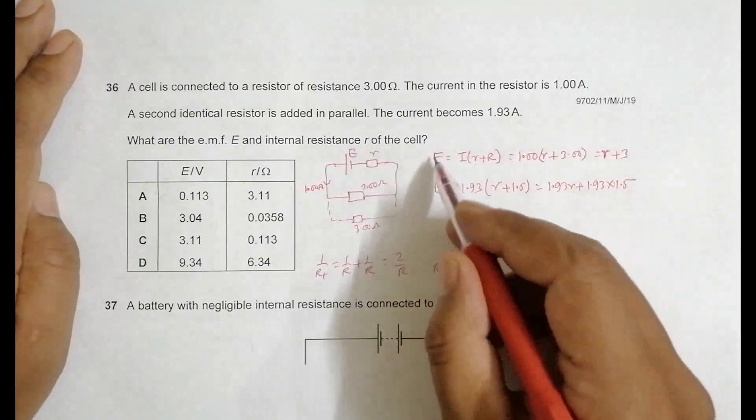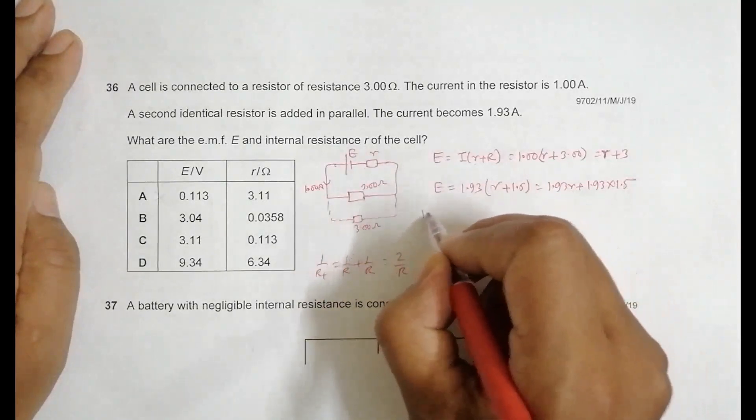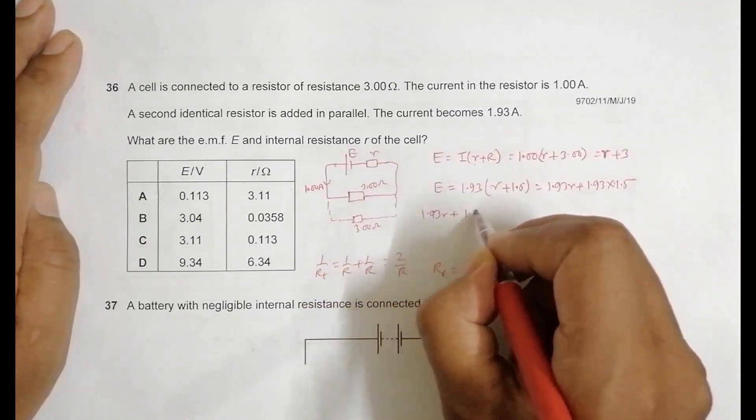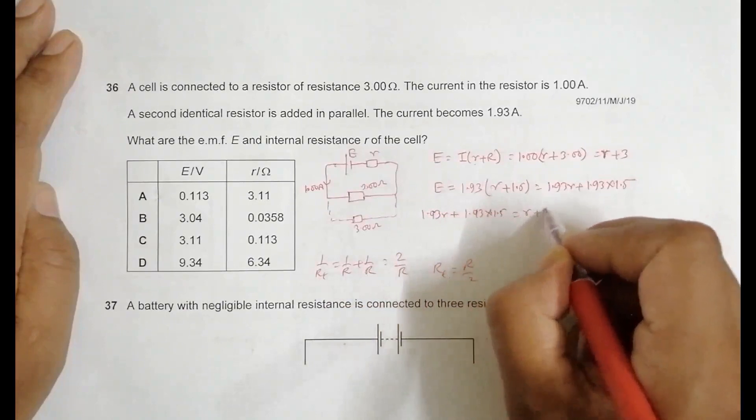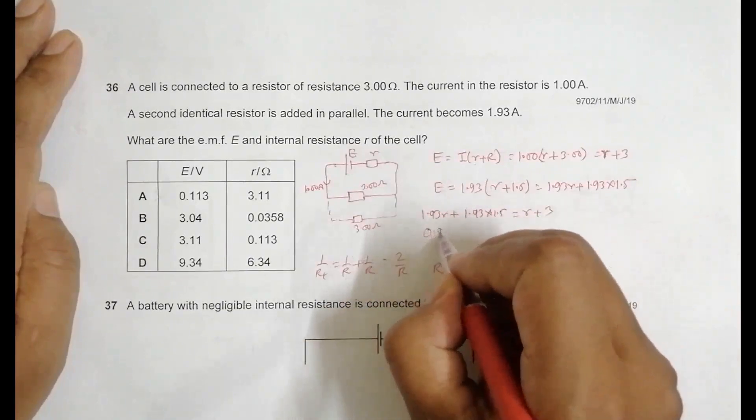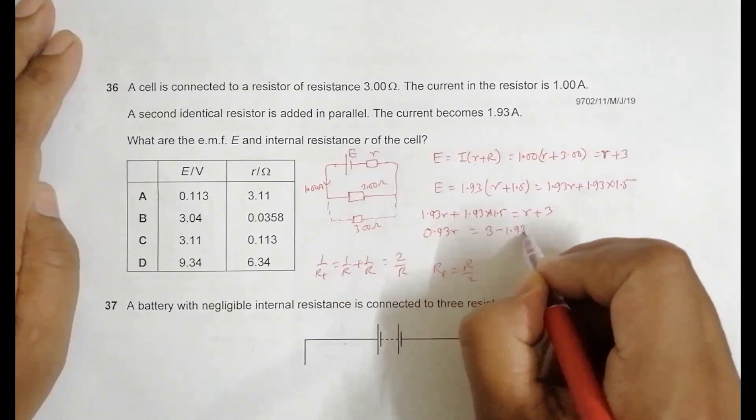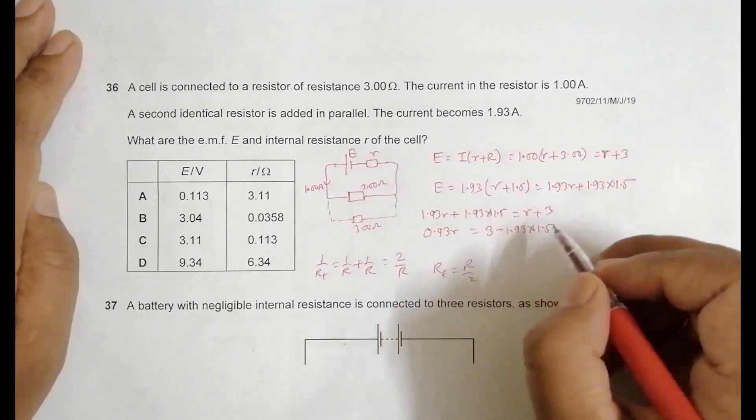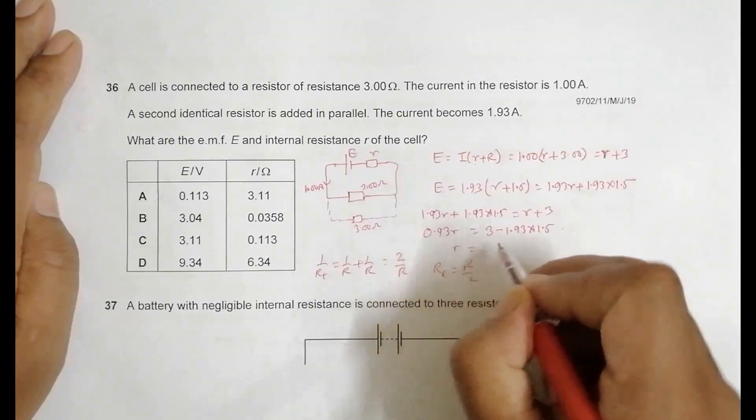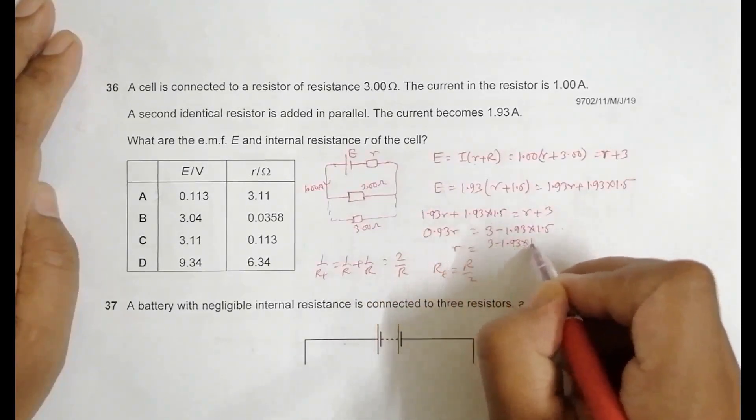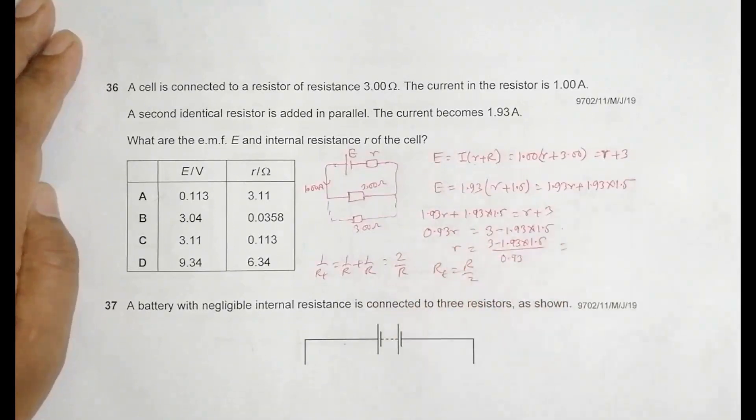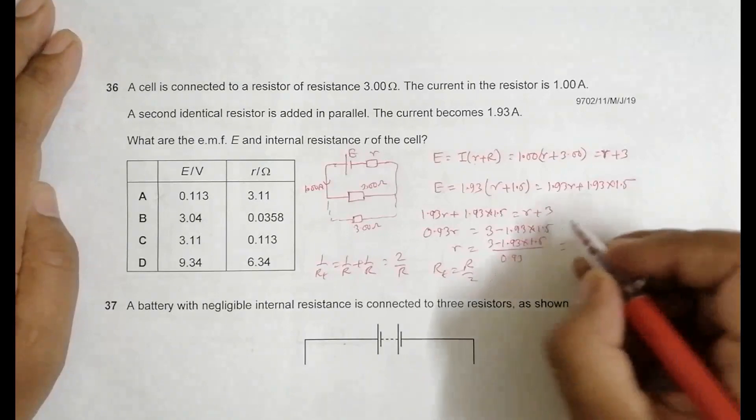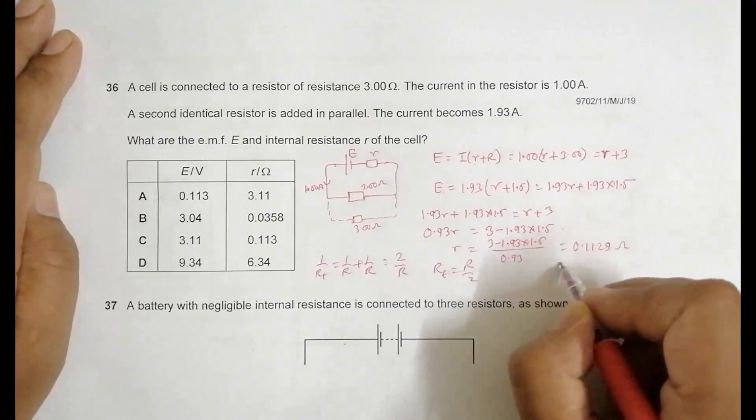Now let's equal these two equations. 1.93r plus 1.93 times 1.5 equals r plus 3. So it becomes 0.93r equals 3 minus 1.93 times 1.5. When I do this calculation, r equals (3 minus 1.93 times 1.5) divided by 0.93, which becomes equal to 0.1129 ohm.